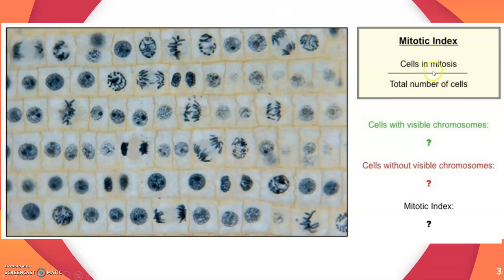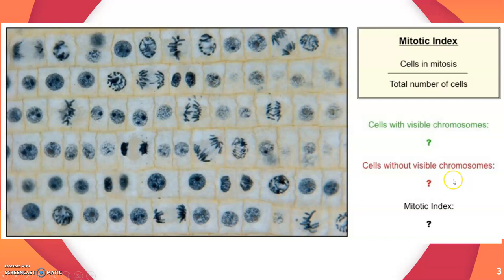So, mitotic index again is cells in mitosis over the total number of cells. We need to physically count how many cells have visible chromosomes versus how many do not. The ones without visible chromosomes are the cells that are not dividing — that's the amount of cells not going through mitosis.